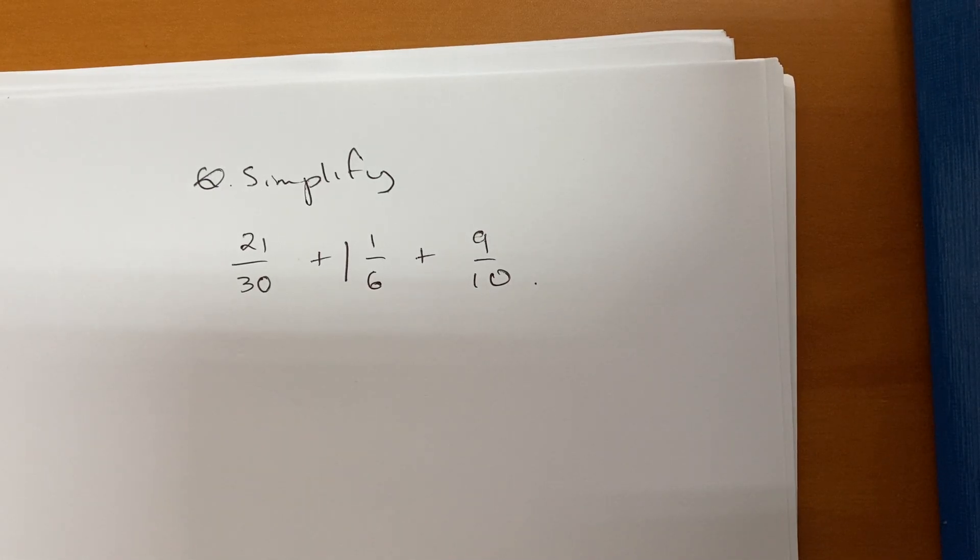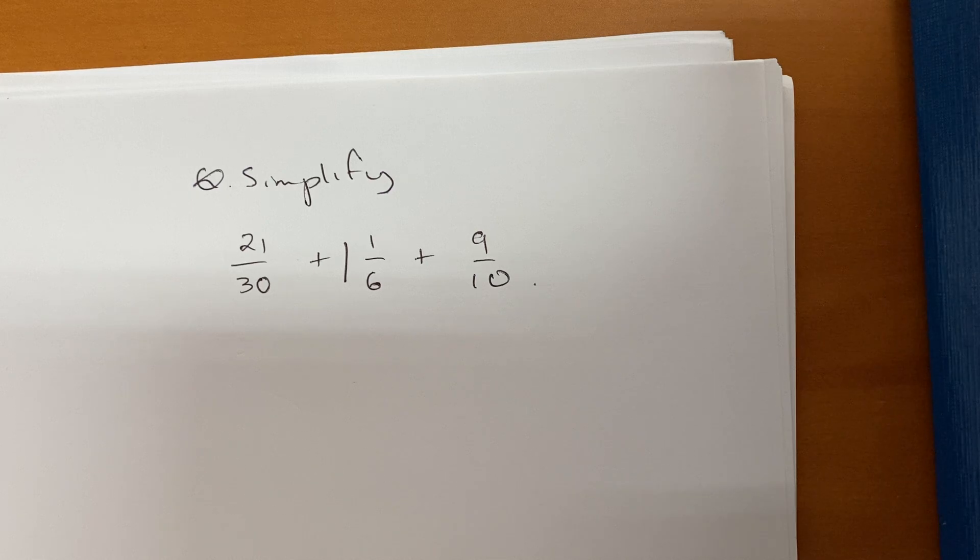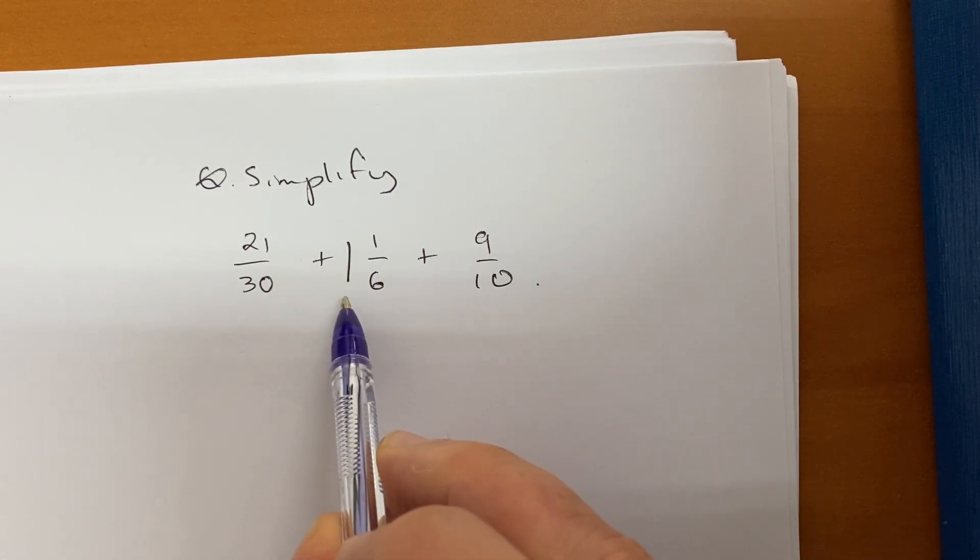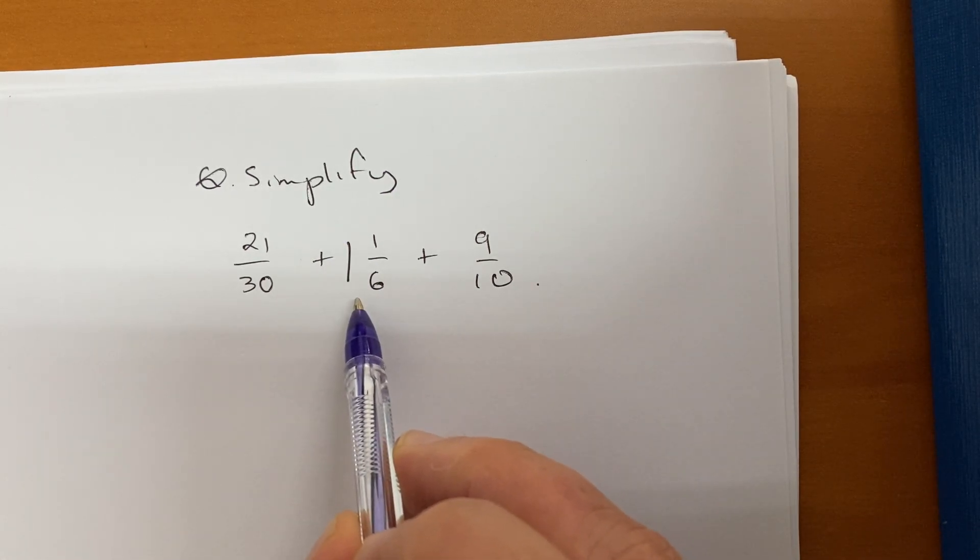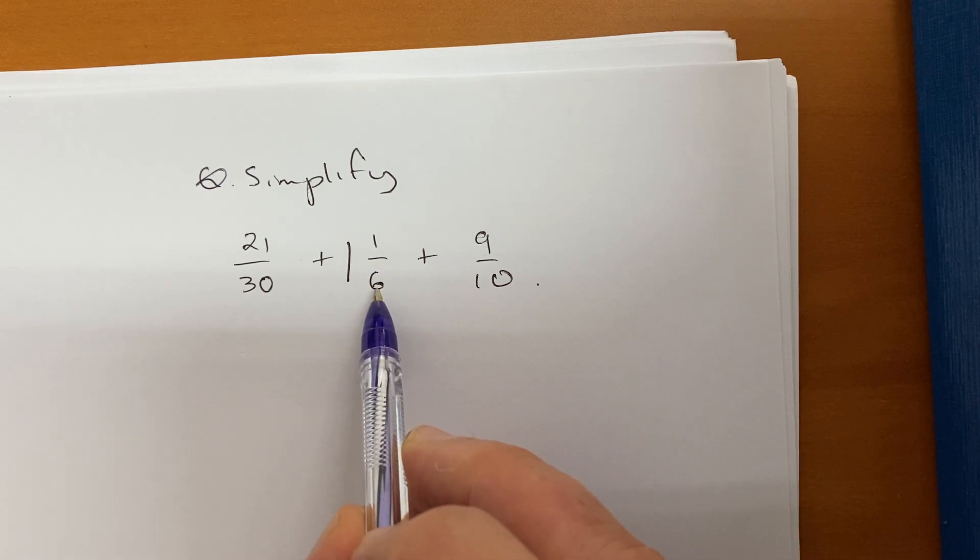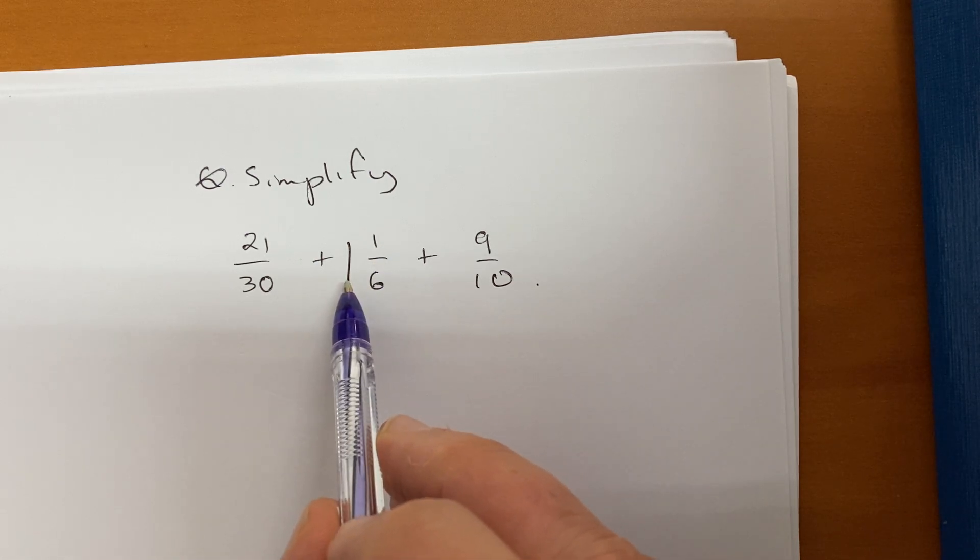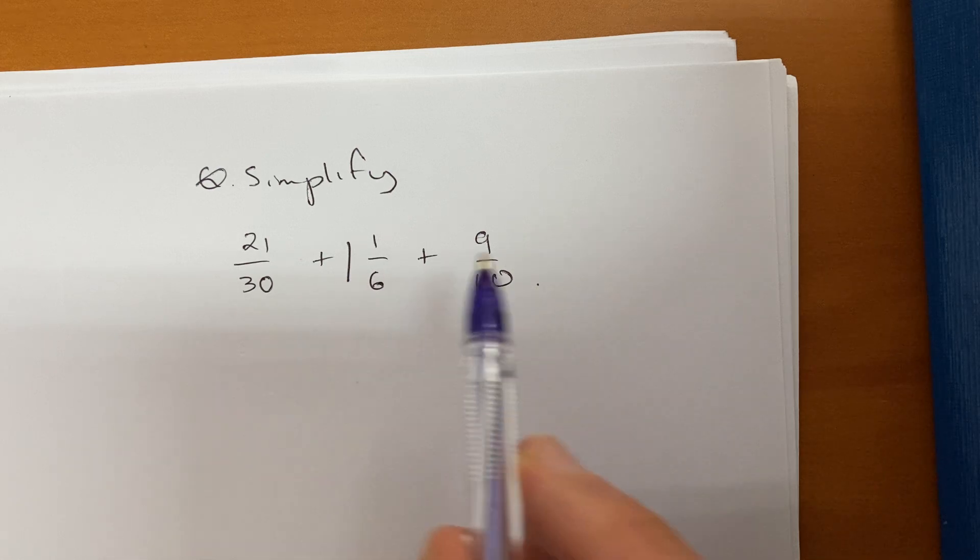Okay, so we're going to look at some more difficult fractional operations. First of all, we've got some adding going on here. This time just three terms, one of those terms is a mixed number. Now, a number of ways I can deal with this mixed number: I can turn it to an improper fraction and then include it in the sixth, or I can just add it on at the end because it's just a whole number and we're adding.